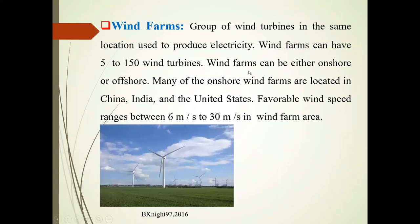First we will discuss about wind farms. See in this image — it is an image of a wind farm. There are a number of wind turbines. A group of wind turbines in the same location used to produce electricity is called a wind farm. A wind farm can have 5 to 150 wind turbines.